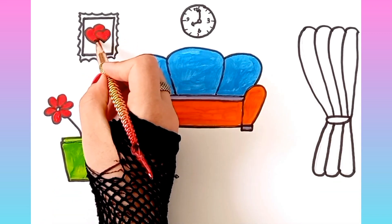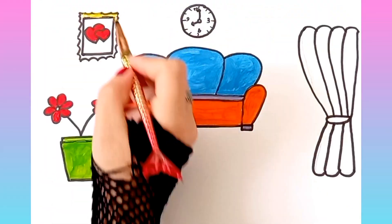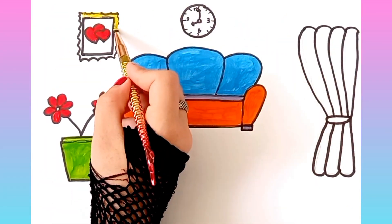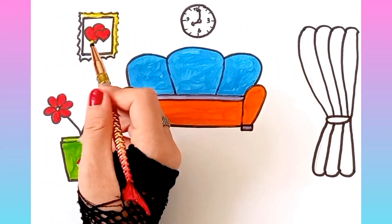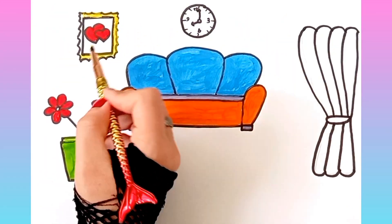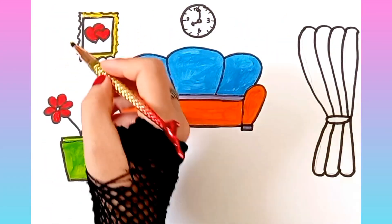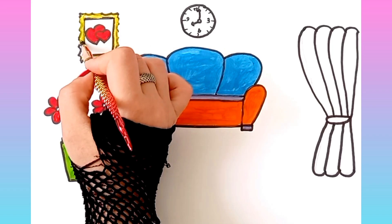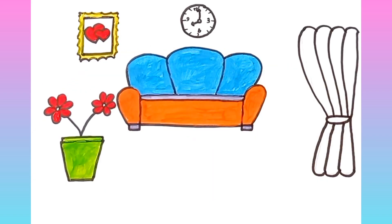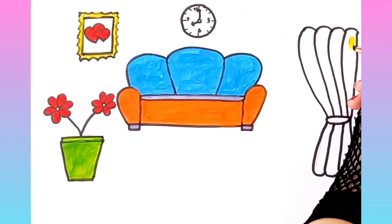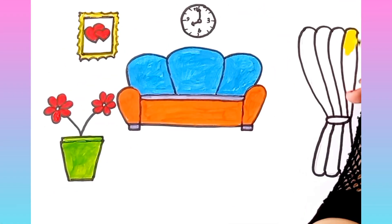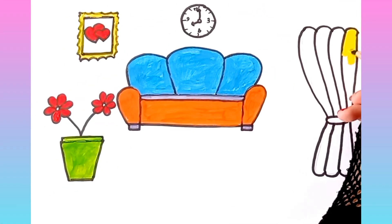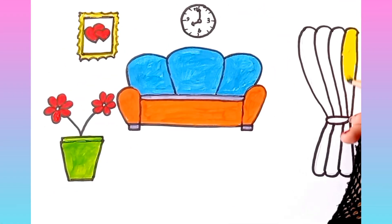M is for mat, m, m, mat. N is for net, n, n, net. O is for orange, o, o, orange.